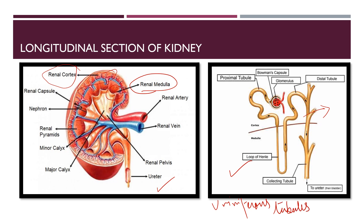In this diagram we can see renal pyramids and the renal capsule. The renal capsule is the tough fibrous connective tissue that closely encloses the kidney, providing support to the softer tissue inside.